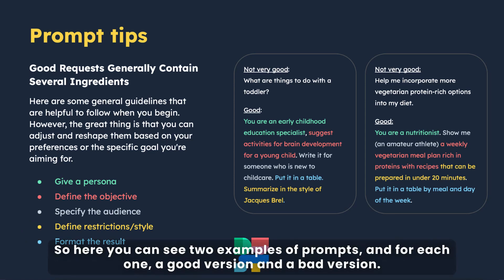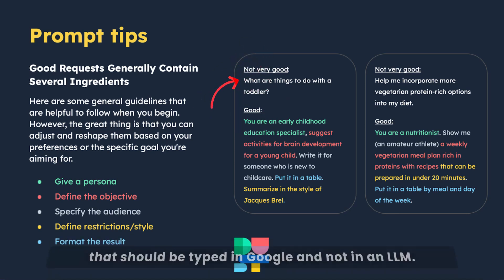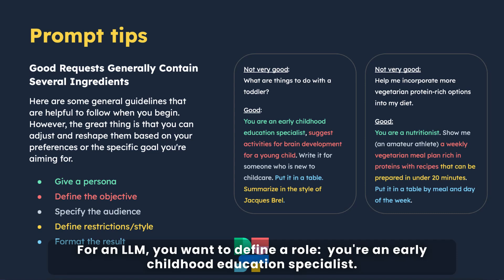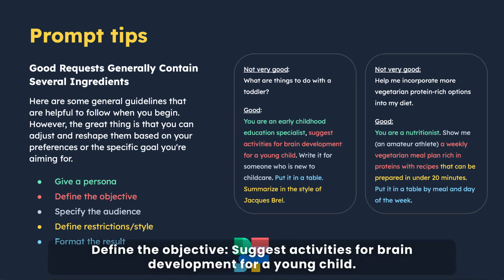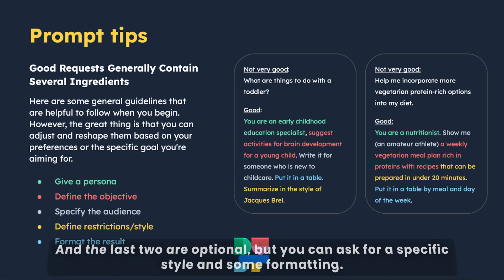Here you can see two examples of prompts, and for each one a good version and a bad version. If you look at the toddler one, it pretty much looks like a Google search — that should be typed in Google, not in an LLM. For an LLM you want to define a role, so 'you're an early childhood education specialist,' define the objective, suggest activities for great development for a young child, specify the audience and who you are, write it for someone who is new to childcare. The last two are optional but you can ask for a specific style and some formatting.